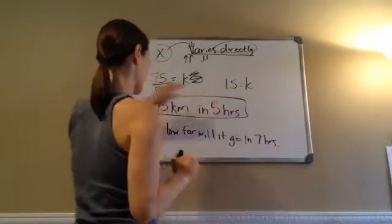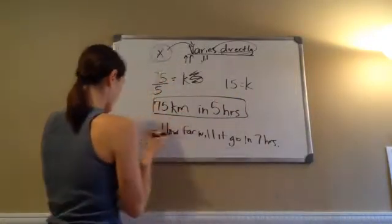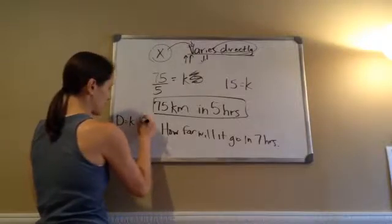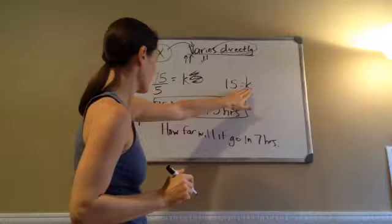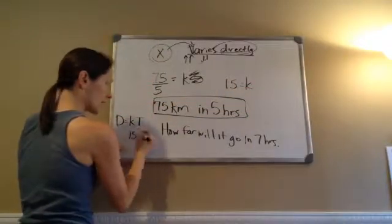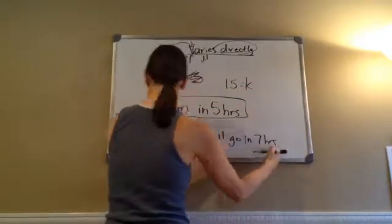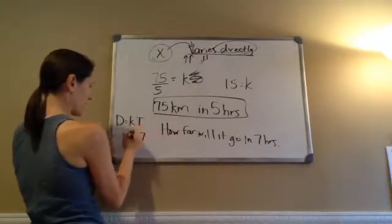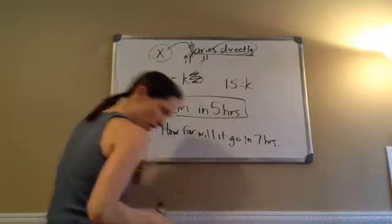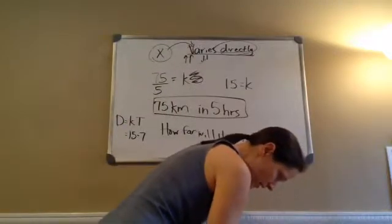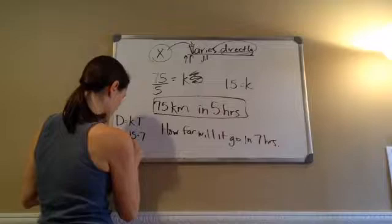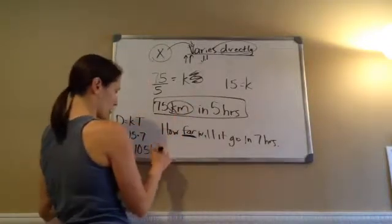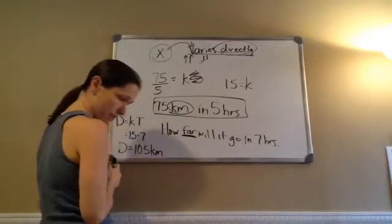We use that same equation: D equals KT. Now we use K equals 15. How far will it go in seven hours? Seven hours is our time. So 15 times 7 equals our distance. 15 times 7 is 105. The distance equals 105 kilometers.